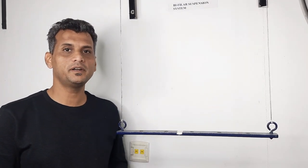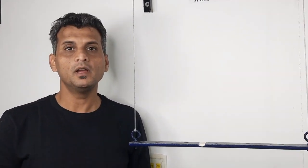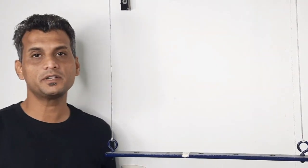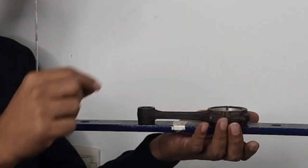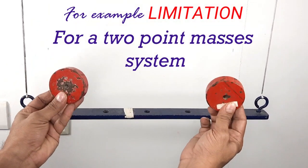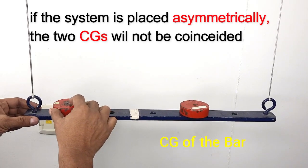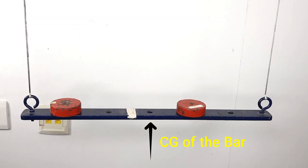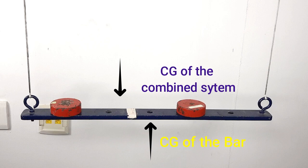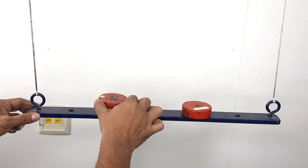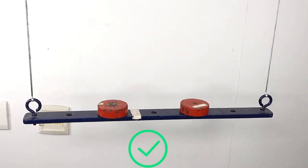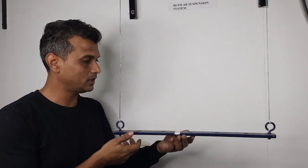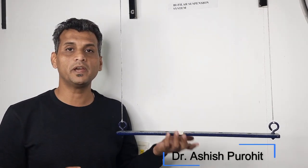I hope this demonstration helped you understand how to get the radius of gyration using a Bifilar suspension system. To summarize: the key limitation is that to find the moment of inertia of an unknown system, you must know its center of mass a priori so that the two axes of rotation coincide and the result is correct. For example, if you place the system asymmetrically with respect to the center of mass of the base system, the axis of rotation of the combined system will not match the previous case and you cannot compare the two moments of inertia. The system has three degrees of freedom — two translational and one rotational — and it is the rotational degree of freedom that we used to find the radius of gyration.